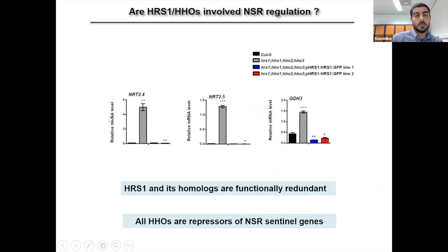This is also true for the two other NSR marker genes NRT2-5 and GDH3. So in order to validate this data, we did a complementation test using two independent lines, and we showed that HRS1 and its homologues are functionally redundant, and that all HHOs are repressors of NSR sentinel genes.